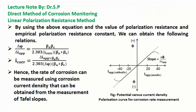By using the above equation and the values of polarization resistance and empirical polarization resistance constant, we can obtain the following relation: ΔΦ / ΔI_applied equals (βa × βc) / (2.303 × Icorr × (βa + βc)). Since Icorr equals ΔI_applied × (βa × βc) / (2.303 × ΔΦ × (βa + βc)), the corrosion rate can be measured using corrosion current density obtained from the measurement of Tafel slopes. In the figure, we can see that the slope is the ratio of change in potential to applied current. Using these equations, we can monitor the corrosion rate directly by the linear polarization resistance method.